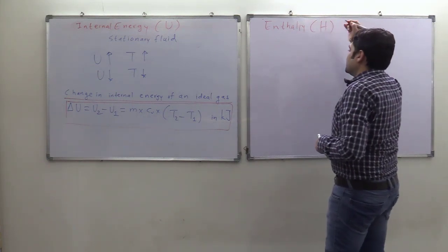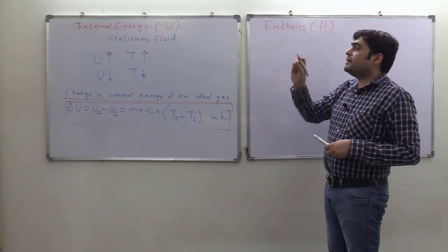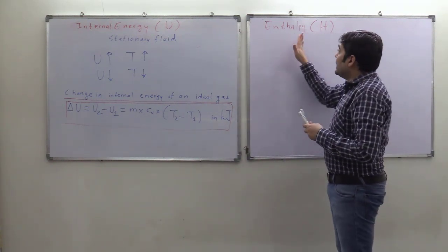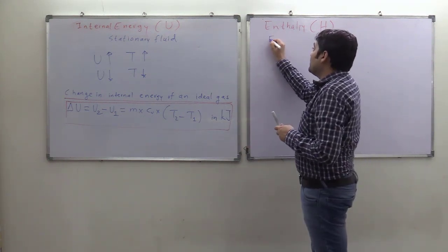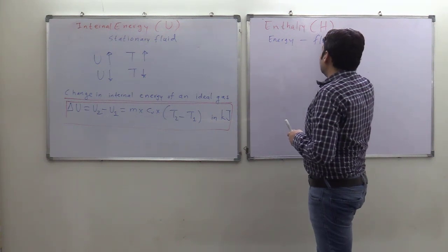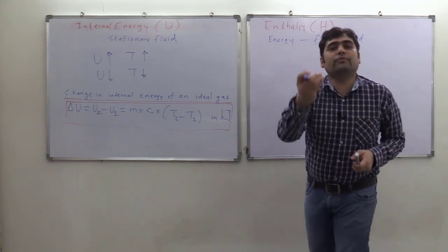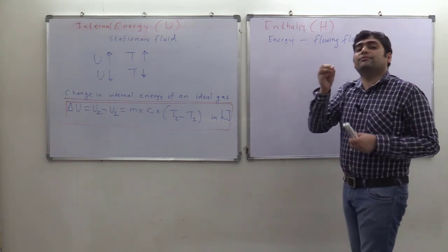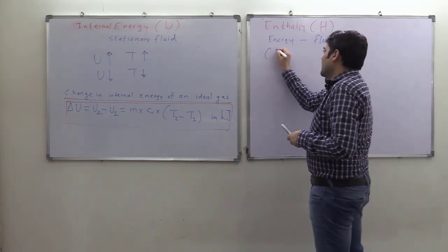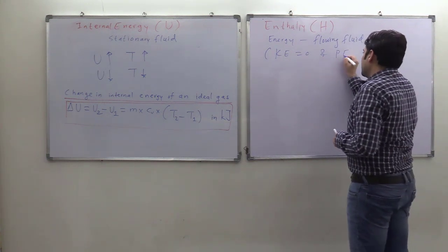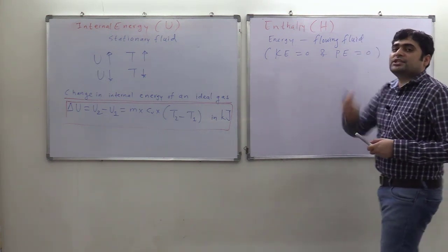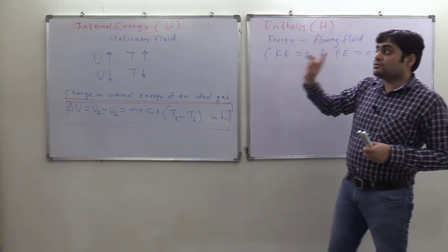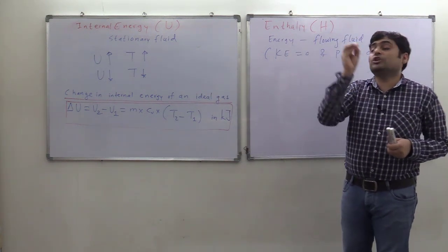Enthalpy is denoted by capital H. Internal energy is the energy of a stationary fluid, whereas enthalpy is the energy of a flowing fluid. For example, river water or refrigerant flowing in a refrigeration system is a flowing fluid. The energy of any flowing fluid can be considered as enthalpy, if we neglect kinetic energy and potential energy effects. So internal energy is the energy of stationary fluid, and enthalpy is the energy of flowing fluid.